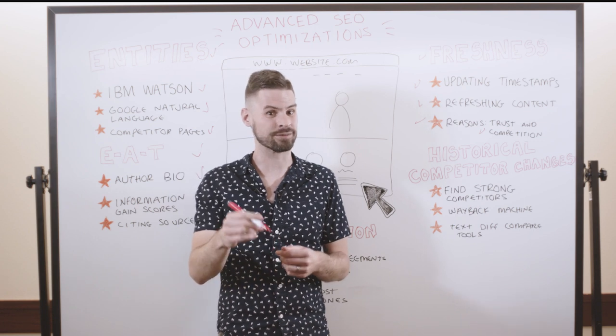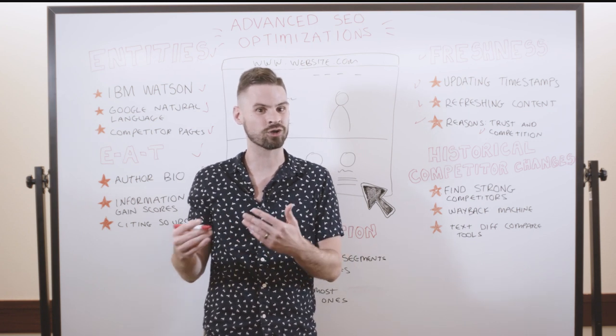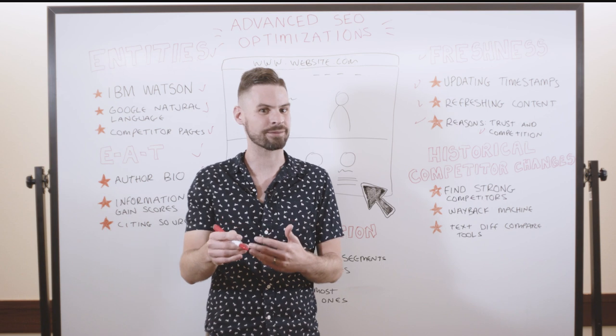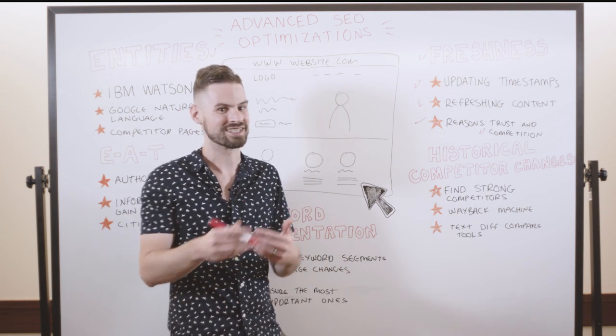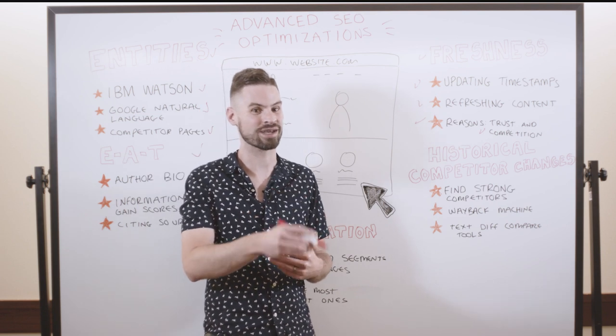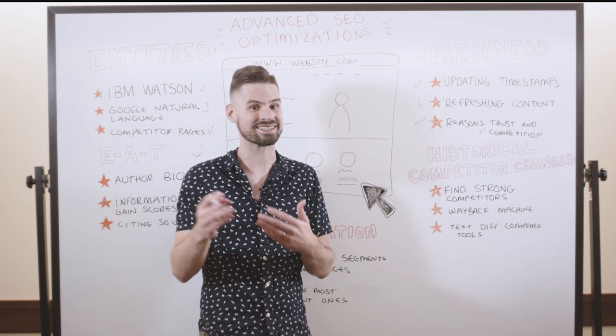However, in recent years, Google is making a push toward including live blog posting type URLs in top stories. I think they're trying to incentivize publishers to update their content in real-time to set the expectation that users can get real-time information on Google instead of just Twitter.